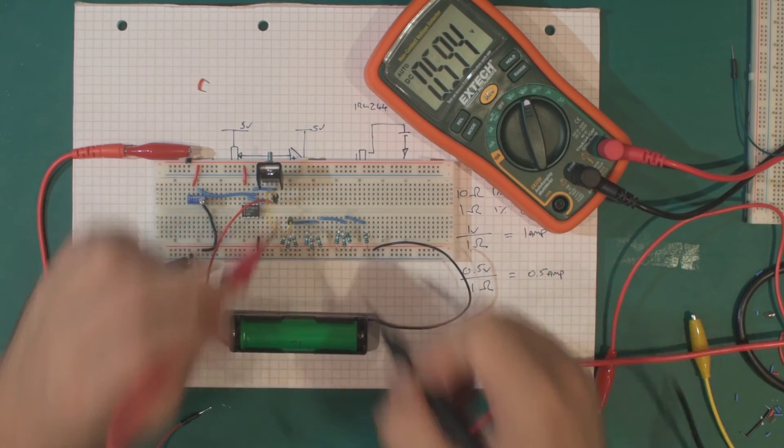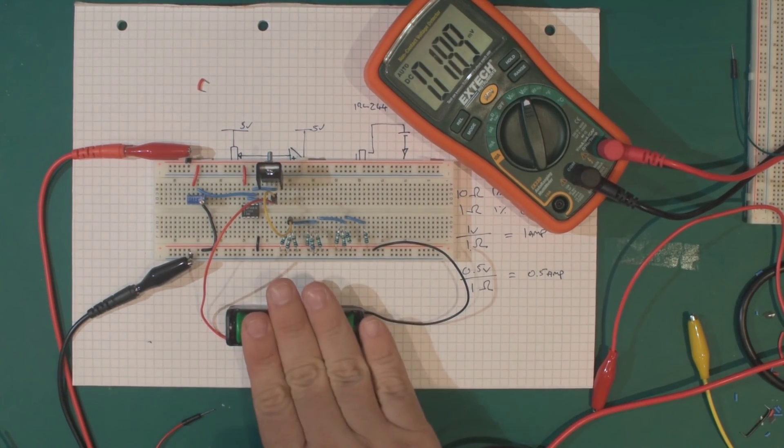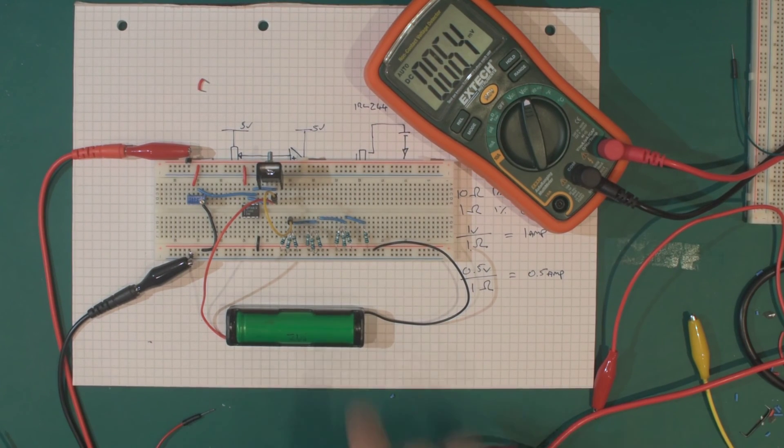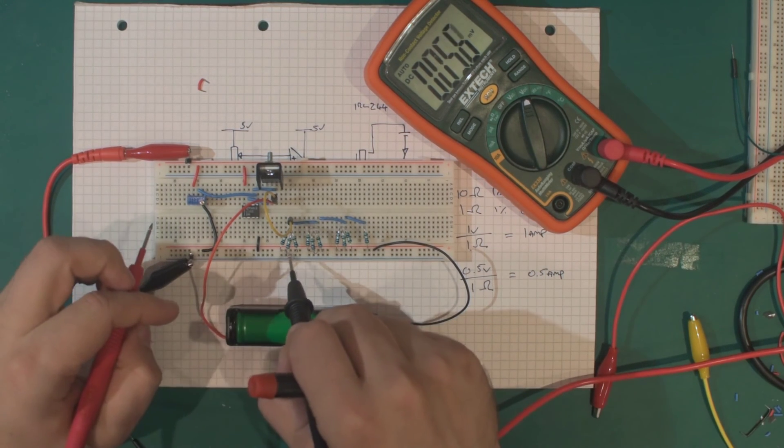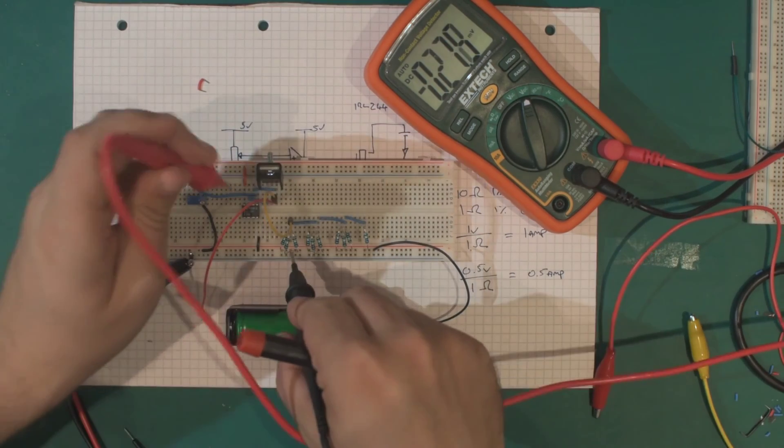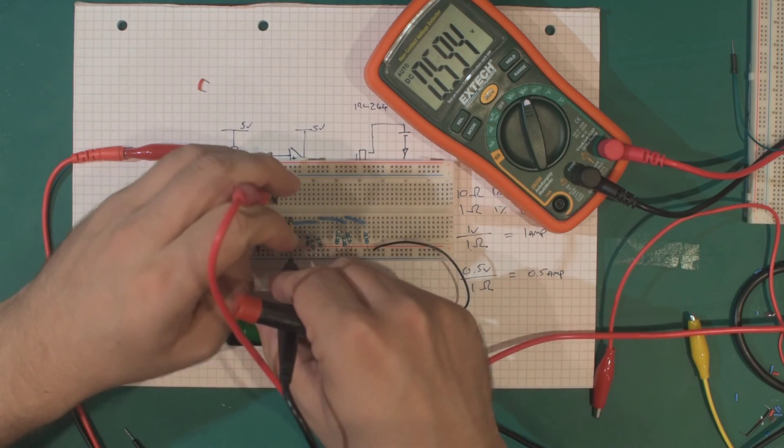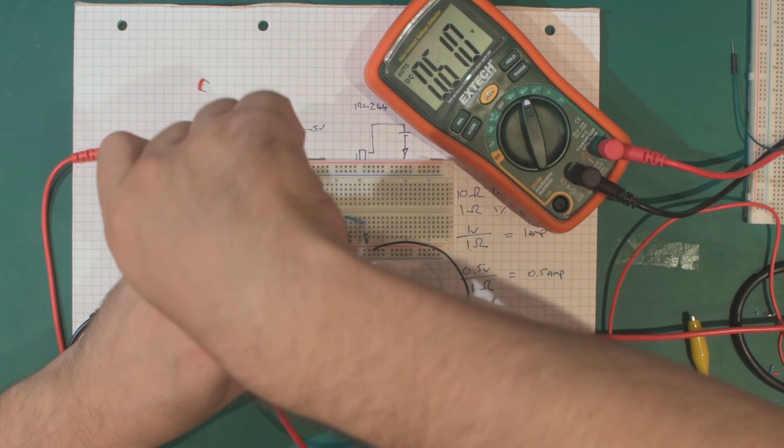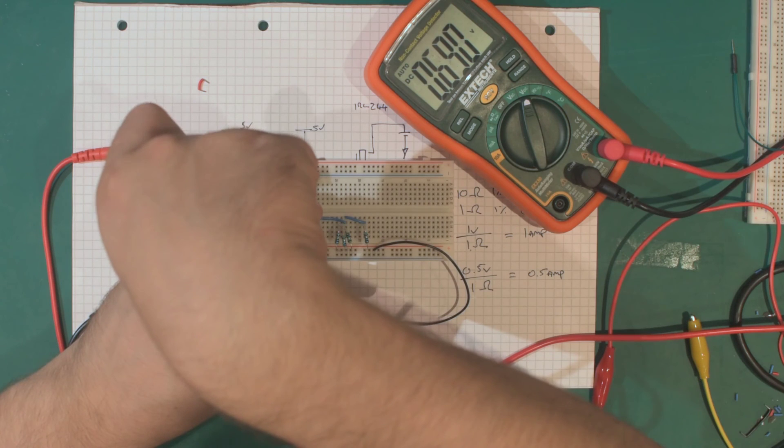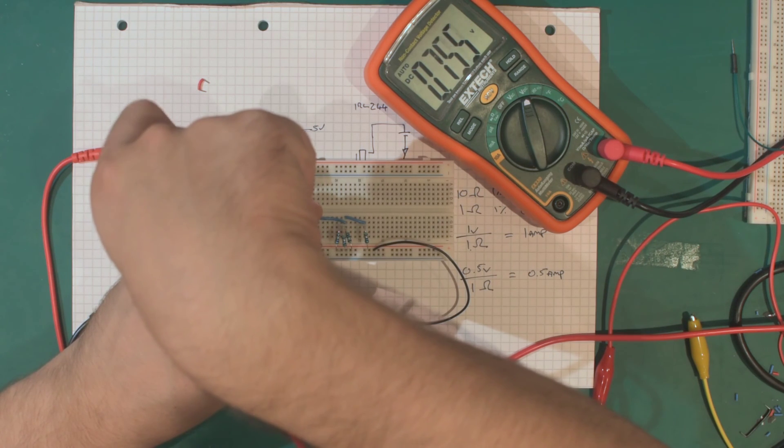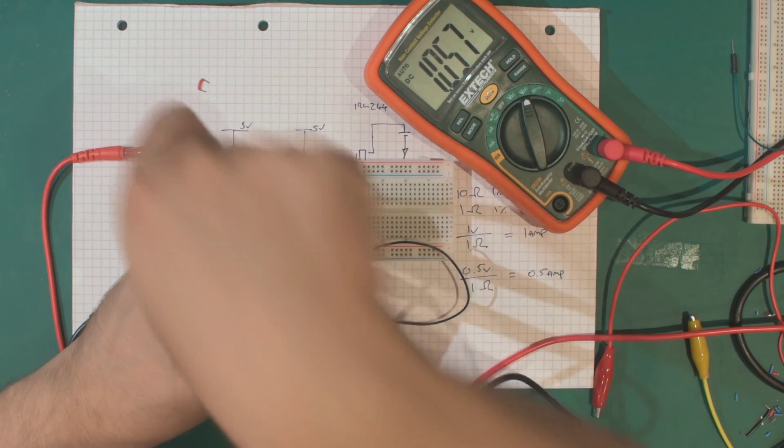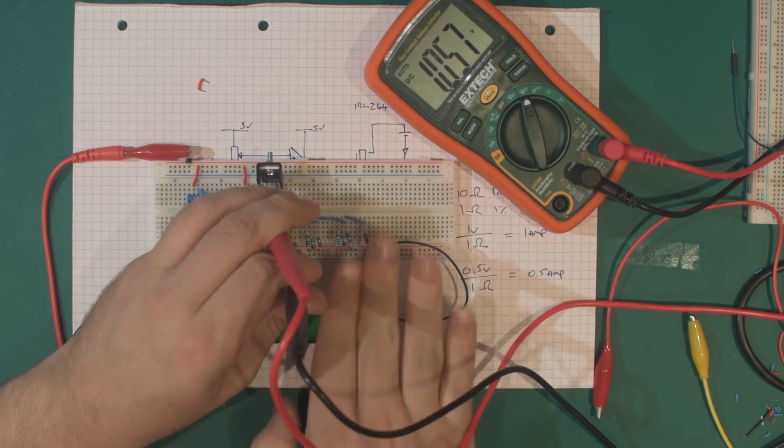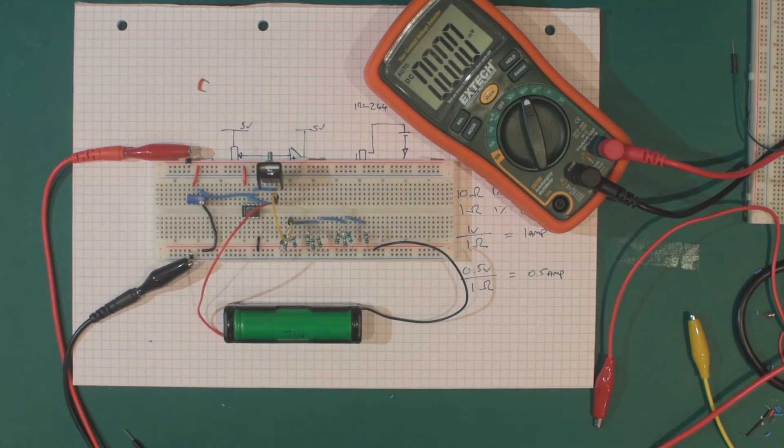This should mean we're now dropping half an amp from this battery. Let's turn this thing up and see if we can draw some more. It's 0.6, 0.7, 0.8, 0.9, one volt, which now means we should be dropping one amp across those resistors.